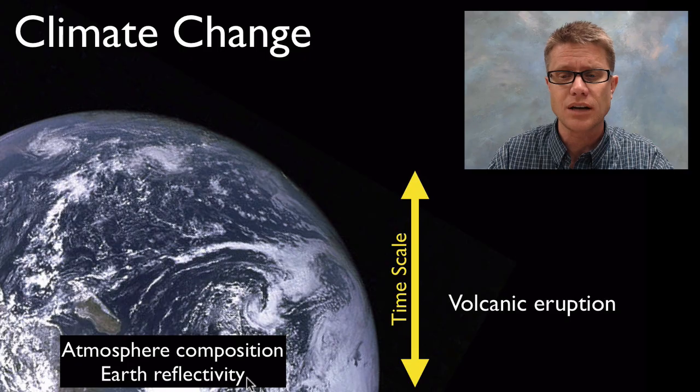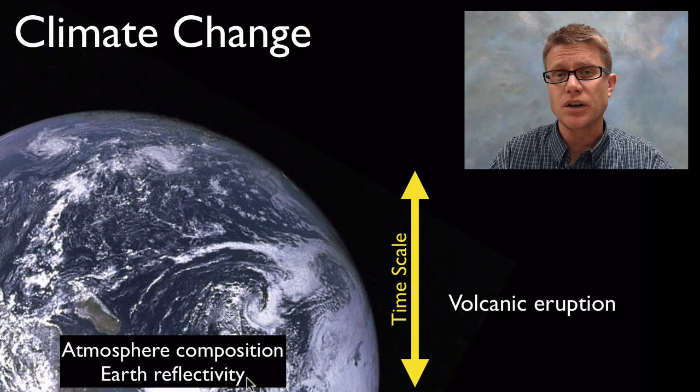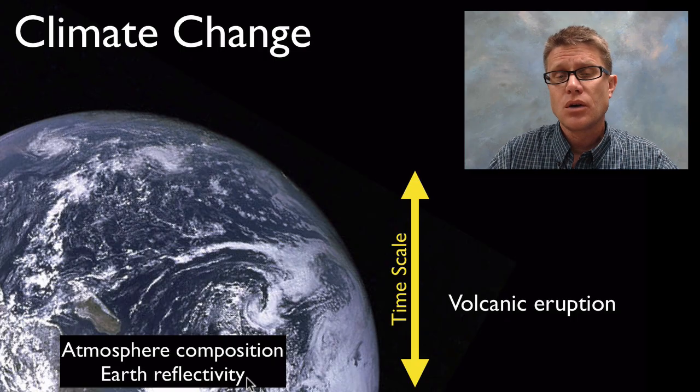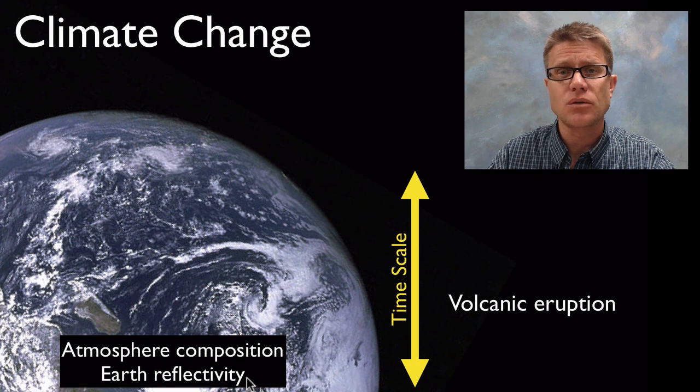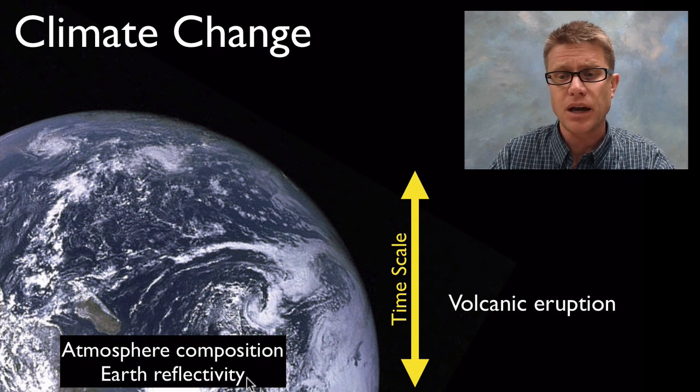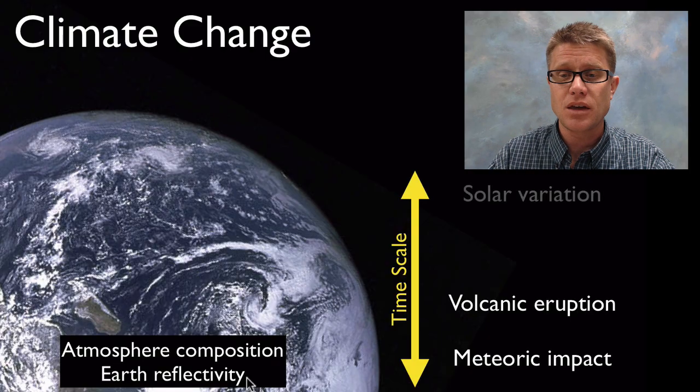What's an example of a short timescale? A big volcanic eruption can throw so much sediment into the atmosphere that it will reflect more of that light. Not as much light gets to our planet, so we could get a cooling of our planet. A meteor impact could do the same thing.